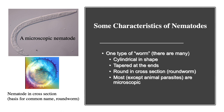How many of you have seen a nematode? My guess is not too many, because most species of nematodes are microscopic, with the exception being some of the large animal parasites. Some general features of nematodes include a cylindrical shape — their body is shaped like a cylinder, and they are round in cross-section. That's illustrated in the color photo on the bottom left, and it's what gives nematodes their common name: roundworm.